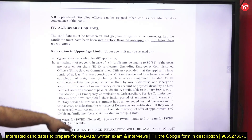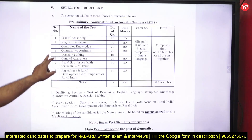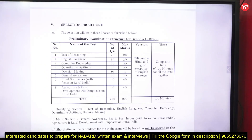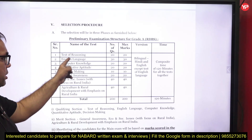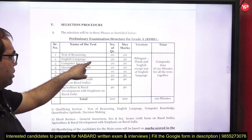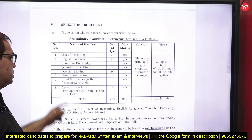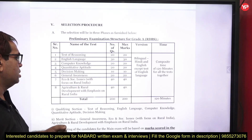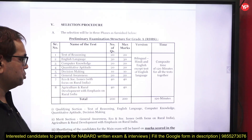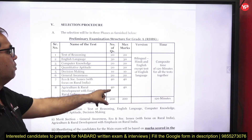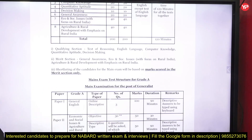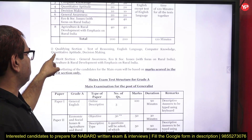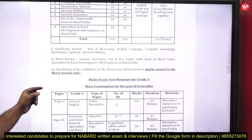Now for the selection process — the preliminary examination structure for Grade A. In the pre-exam, which will be conducted in October: Reasoning 20 questions, English Language 30 questions, Computer Knowledge 20 questions, Quantitative Aptitude 20 questions, Decision Making 10 questions, General Awareness 20 questions, Economic and Social Issues with focus on rural India 40 questions, and Agriculture and Rural Development 40 questions.